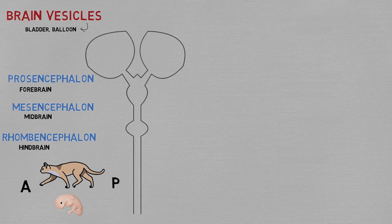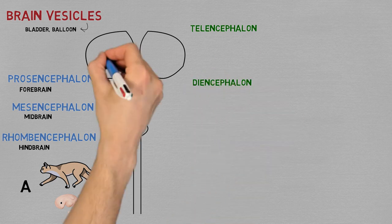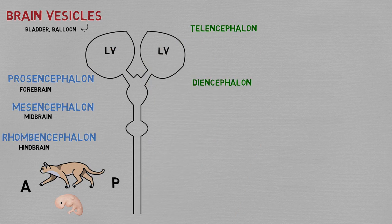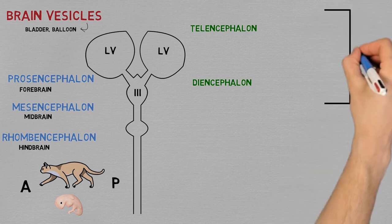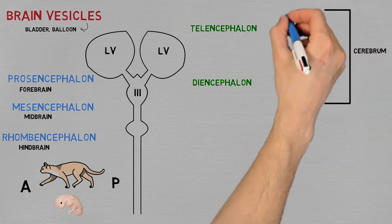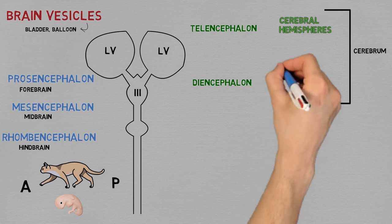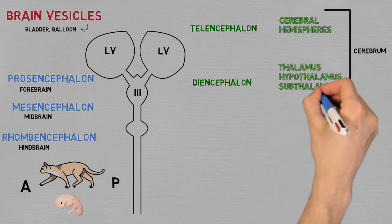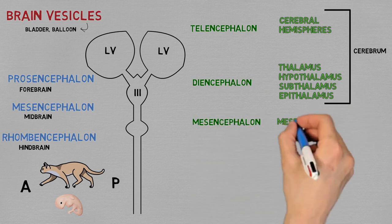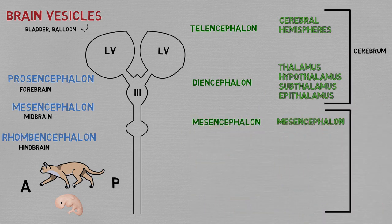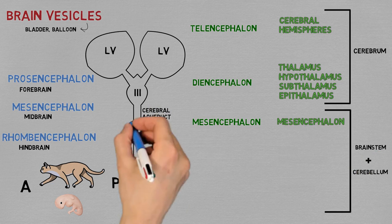The forebrain splits into telencephalon and diencephalon. The telencephalon is the part that covers the two balloons, later called the lateral ventricles. The diencephalon covers what becomes the third ventricle. These two structures give rise to the cerebrum: the telencephalon forms the cerebral hemispheres, and the diencephalon forms the thalamus and its adjacent structures — hypothalamus, subthalamus, and epithalamus. The mesencephalon keeps its name and forms the superior part of the brainstem; its dilatation regresses and becomes a small tube again, the cerebral aqueduct.